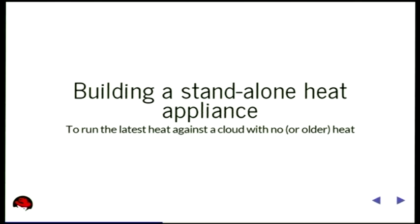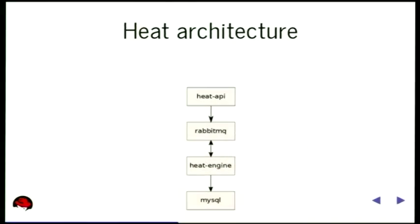I wanted to demonstrate something actually happening, so I decided to do something I'd find useful: a standalone Heat appliance. Heat is normally a multi-tenant tool running in the cloud, part of the service catalog configured in Keystone. It can increasingly be run in a standalone mode not as integrated with the OpenStack it's running within. I wanted to build something which runs the latest Heat — whatever is checked out on my laptop — against a cloud which either doesn't have Heat or has an old Heat, just to play with it and try things out. And because of that, you get to learn about the Heat architecture.